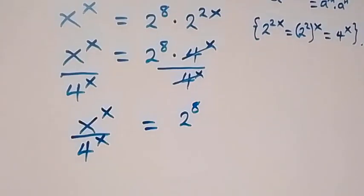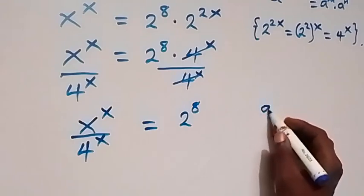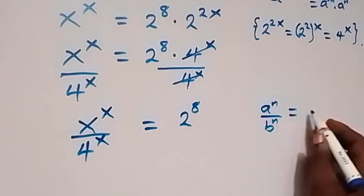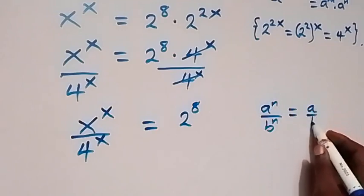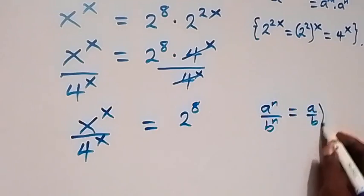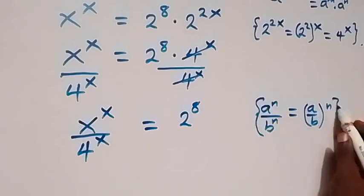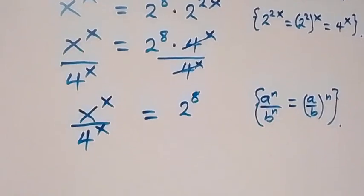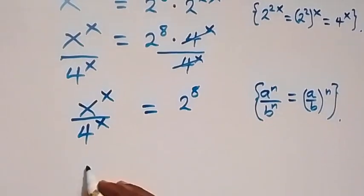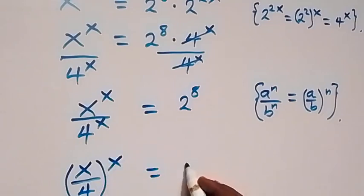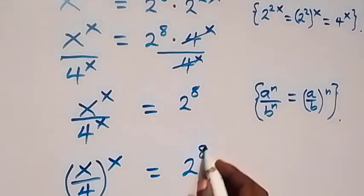And from here, when we have a raised to power n over b raised to power n on the law of indices, this is the same as a over b, all raised to power n. So when we apply this here, this will become x over 4, all raised to power x, equals to 2 raised to power 8.